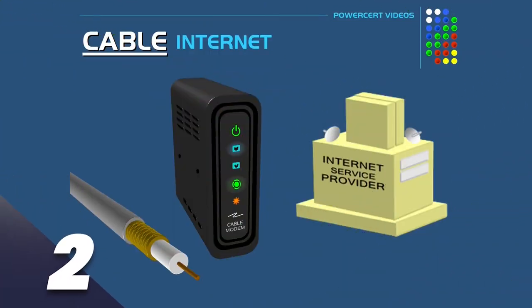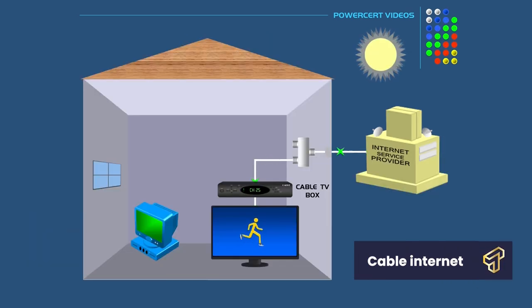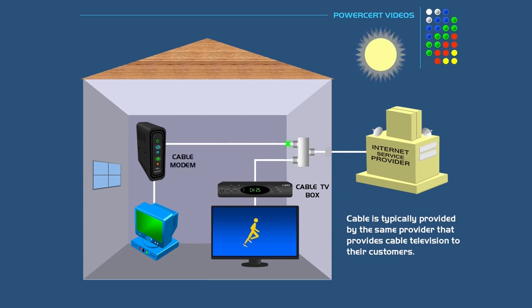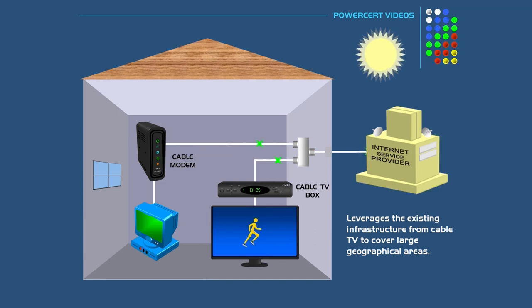Number 2: Cable internet. Cable internet is a form of high-speed connection that uses a cable television design and infrastructure to provide users with access to the internet. Also, the network that supplies your cable TV connection is the one responsible for providing you with access to the internet.